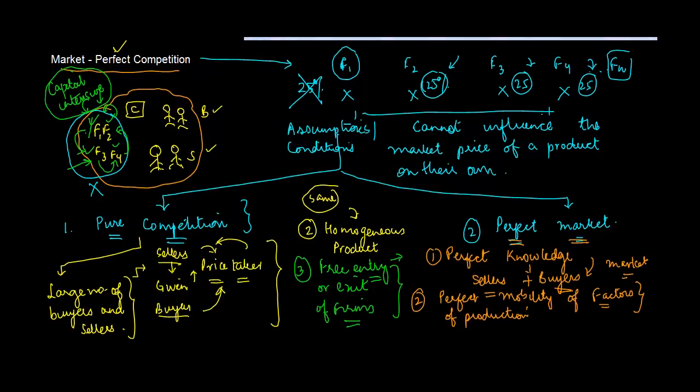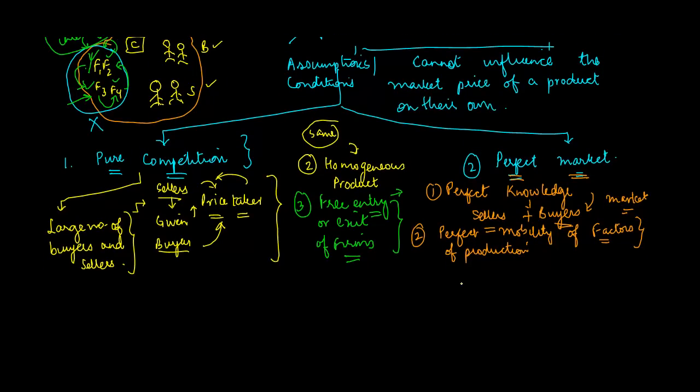And the third one is that there are no selling or transportation costs. Because if there are selling and transportation costs, that might differentiate the cost factor. So the selling costs are assumed to be zero, and the transportation cost is also assumed to be zero because it is assumed that all the goods are produced locally.